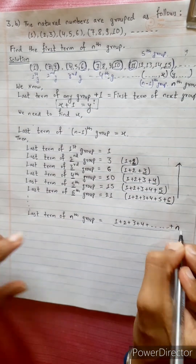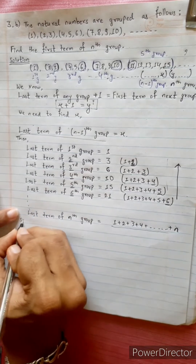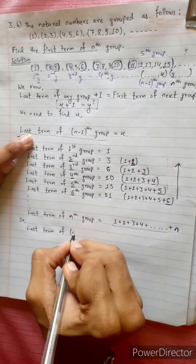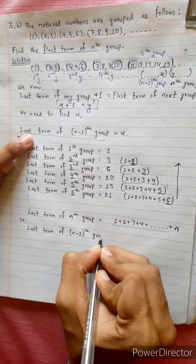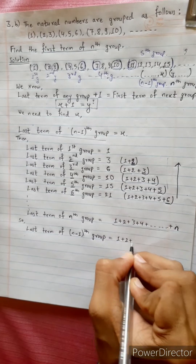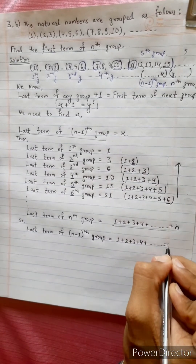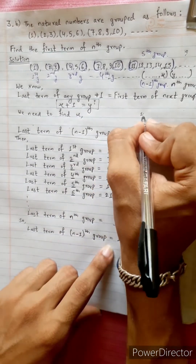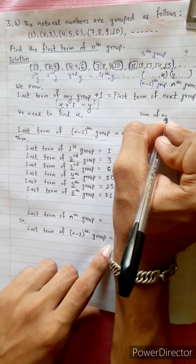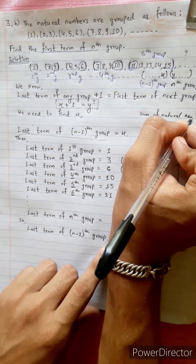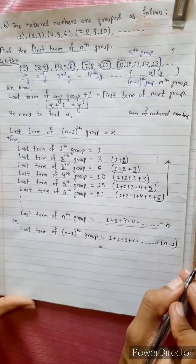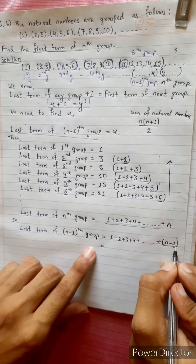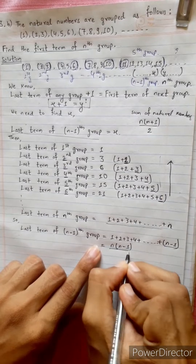1, 2, 3, 4, 5, 6 — this is the last group. Sum of the n-1 th group equals 1 plus 2 plus 3 plus 4 plus dot dot dot plus n minus 1. The sum of natural numbers formula is n(n+1) divided by 2. So n minus 1 times n minus 1 plus 1, all divided by 2.